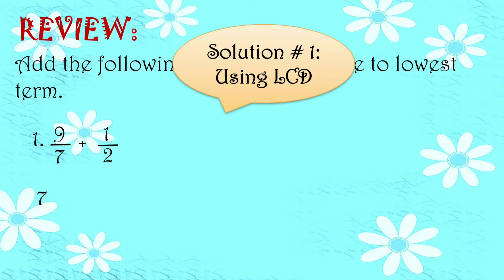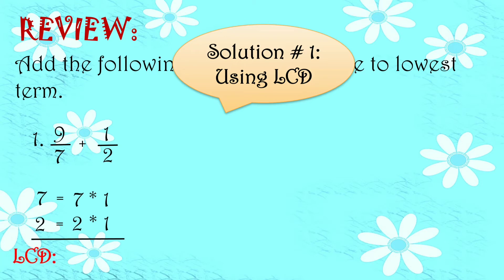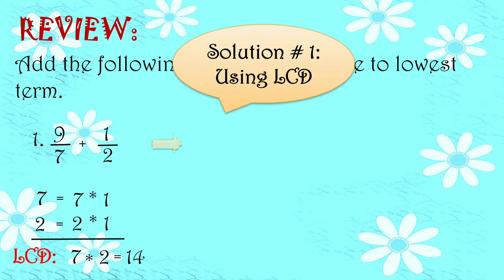So ang ating denominator ay 7 saka 2. Si 7 may factor na 7 times 1, at si 2 naman may factor na 2 times 1. So pagkuhan ng LCD, yung unique factor nila ilalagay lang natin. Tapos yung common, isulat lang natin as 1. Si 7 may unique factor na 7, at si 2 may unique factor na 2. Si 1 hindi ko na nilagay kasi automatic times 1 naman yan. So i-multiply natin: 7 times 2 is equals to 14. So meron na tayong LCD — 14.